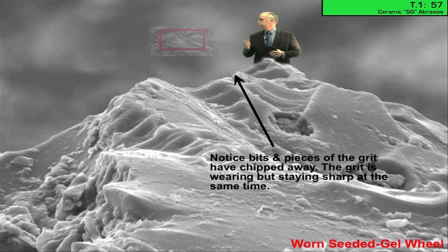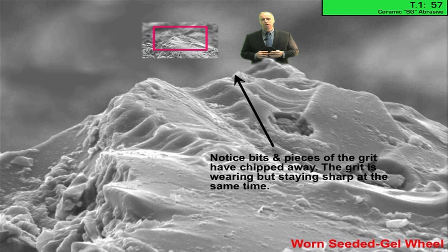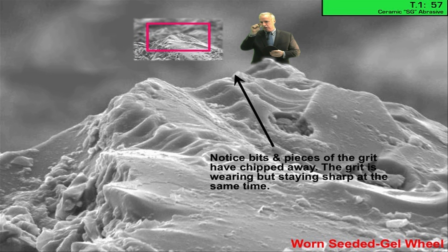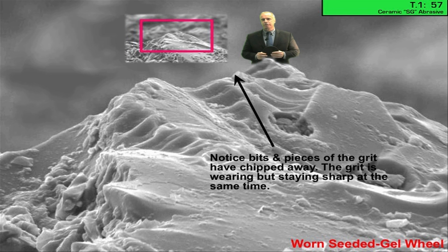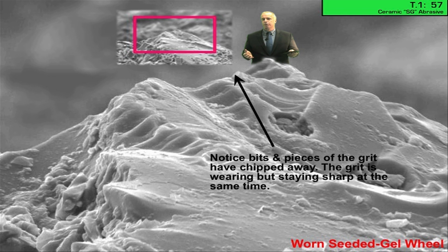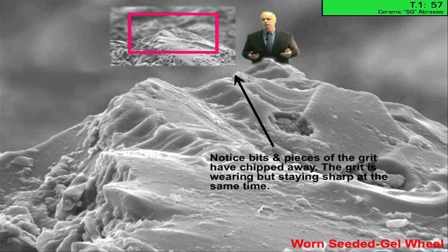But if we do beat on him hard, kind of like in the picture here, we get the guy fracturing in little bits and pieces of the surface. So he's micro fracturing, he's not wearing away too quickly, he's maintaining sharpness.